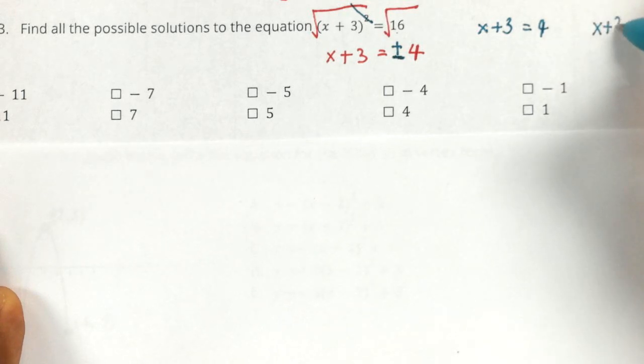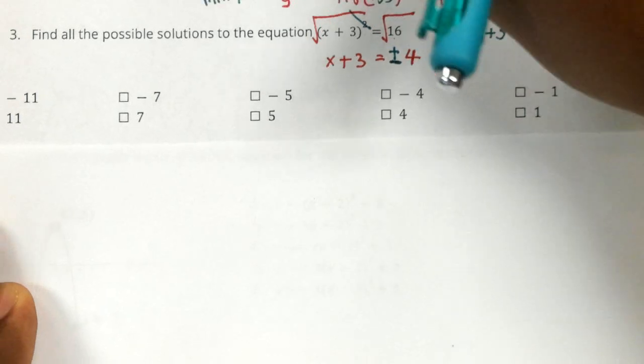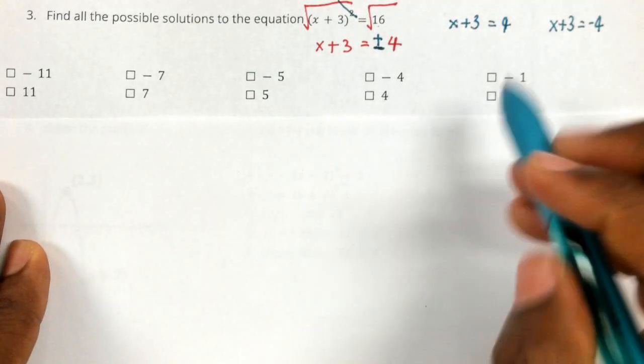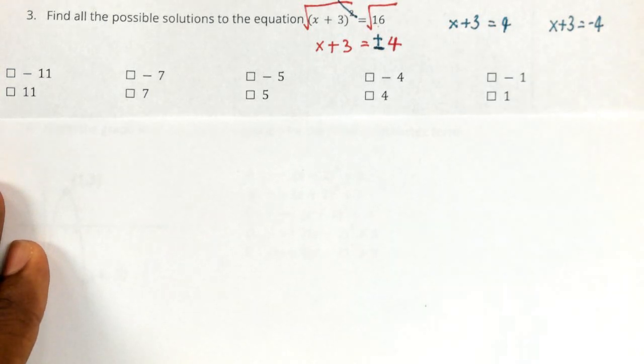And you're also saying that X plus three could be equal to negative four. So again, that's what the plus or minus sign would mean - that it could be a positive four or a negative four.